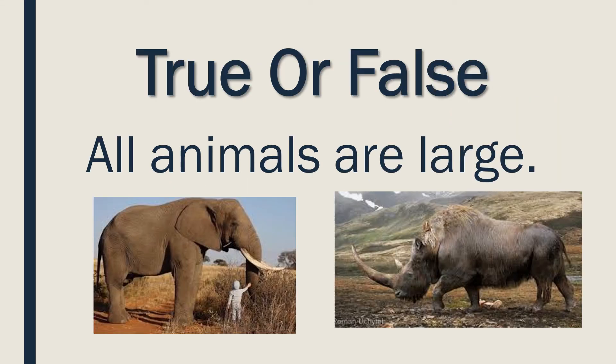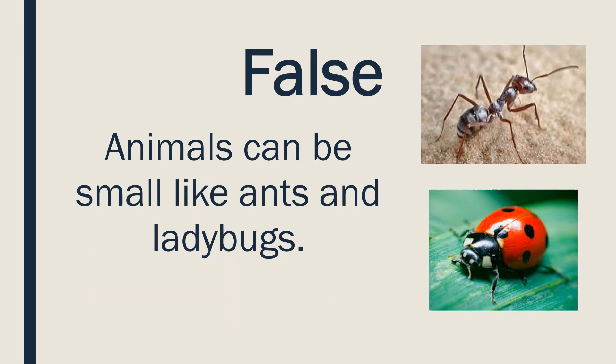True or false: all animals are large? This is false. Animals can be very small, like the ant shown at the top, and small animals can also include ladybugs, like the picture at the bottom.